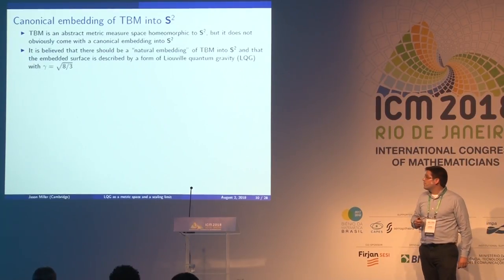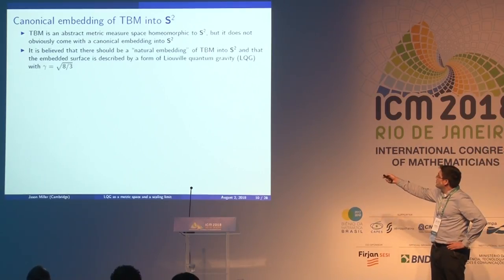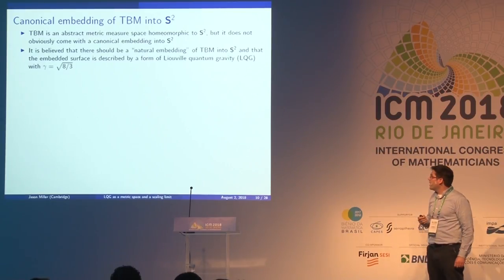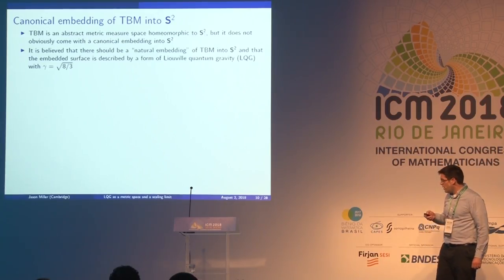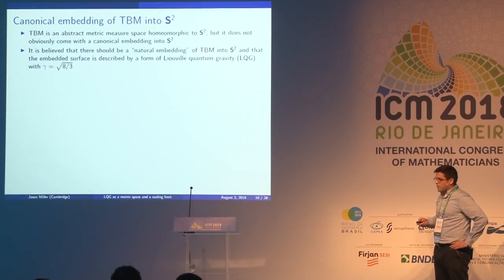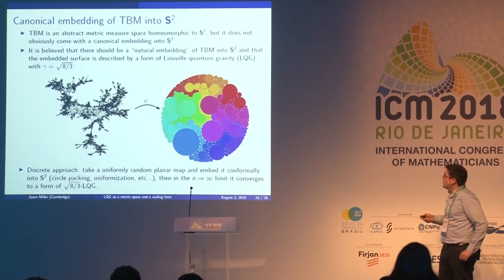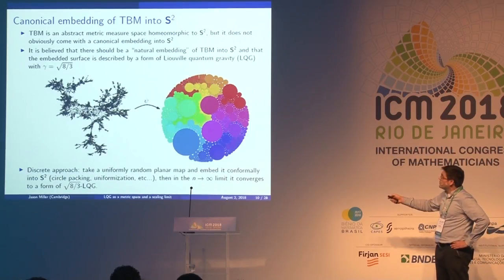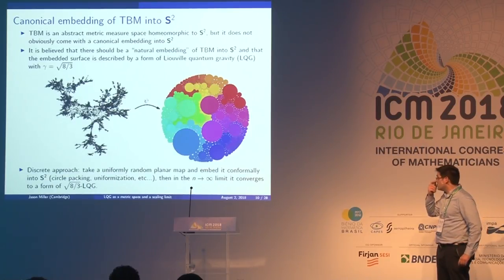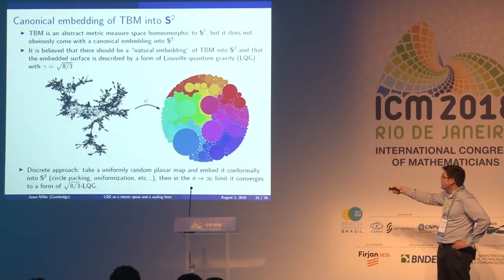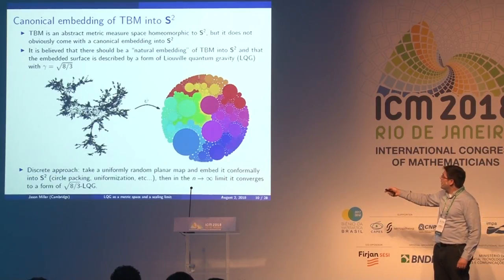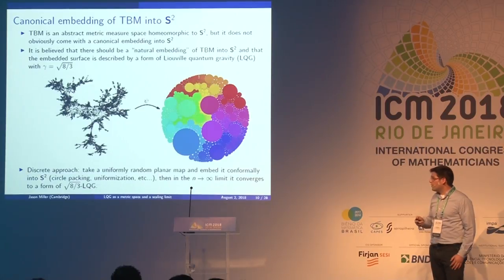The goal of this talk is to take each of these objects and equip it with the other one's structure, and then show that what you get is exactly the same. It has been believed for a long time that the Brownian map can be embedded into the sphere to give a form of LQG with gamma exactly equal to the square root of 8/3. One natural approach is to embed a random quadrangulation via circle packing and take a limit, but the approach described today works purely in the continuum.